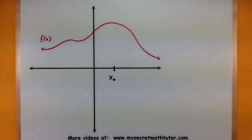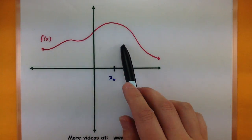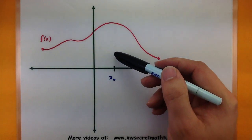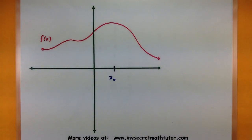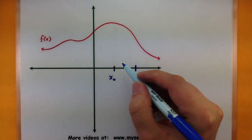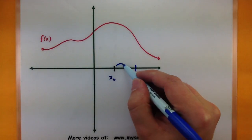So imagine having some generic function, maybe something like this, and it could be increasing, decreasing, just doing all kinds of things. And what I'm really curious is what is happening at this point x sub zero? How is it changing? What is the tangent line at that specific point? Well, the only problem with finding that tangent line directly is if I want to figure out something like this slope, I need two points to do it.